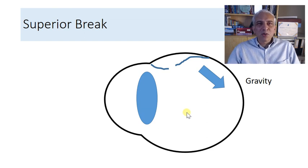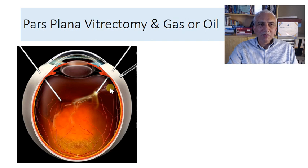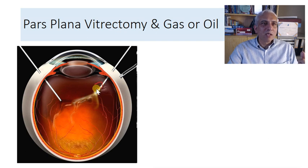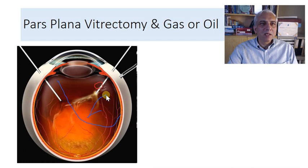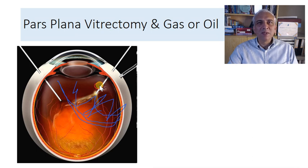With a superior break, gravity pushes the fluid downward. If you seal that break by doing a vitrectomy, you clear the vitreous and address the subretinal fluid. Suppose you had a break here with retinal detachment — once you do the pars plana vitrectomy you can see the bullous RD; then to inject gas you need to do an air-fluid exchange, during which all the SRF would go back. Draining it out through the break would be difficult.